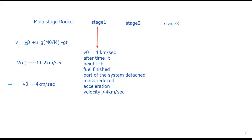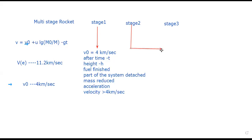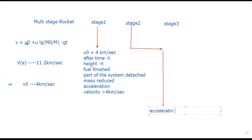Coming to the second stage, the same procedure applies. After the rocket reaches the second height, it moves with even more acceleration. In the second stage, when the fuel in the second compartment is completely burnt, the mass is again reduced. With this reduced mass, the acceleration increases further.